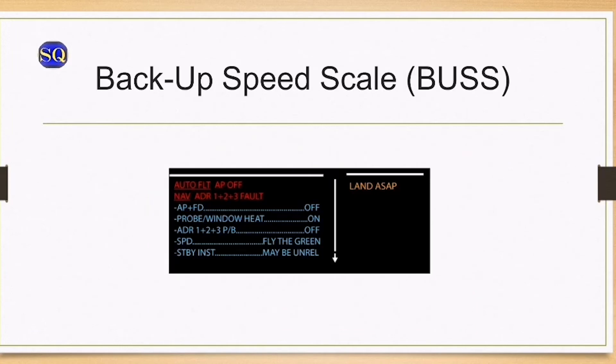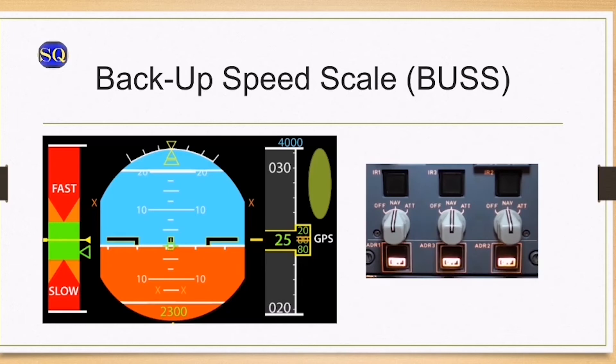Let's move on to the backup speed scale. When below flight level 250, if the crew cannot identify the affected ADRs or if speed indications are unreliable, the flight crew must turn off all ADRs and fly the aircraft using the BUSS, the backup speed scale. The flight crew must first apply the associated ECAM actions.